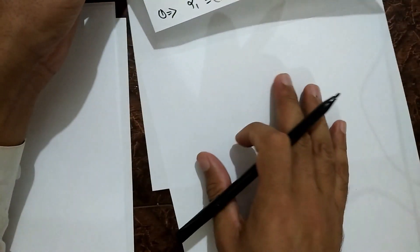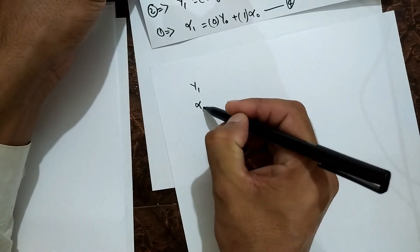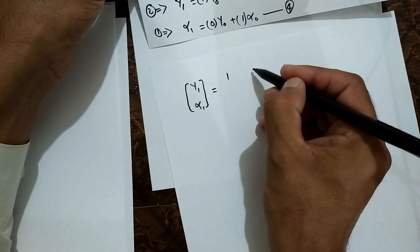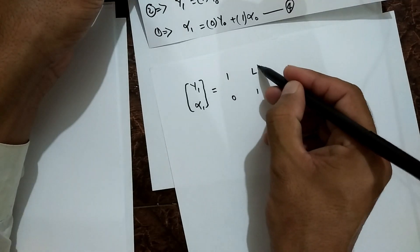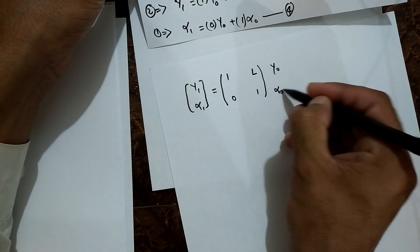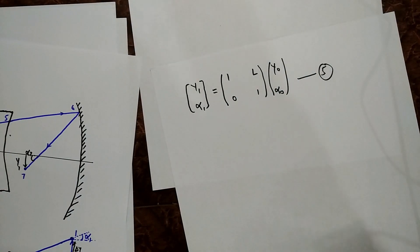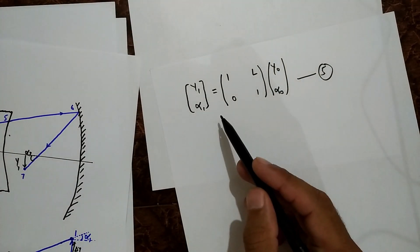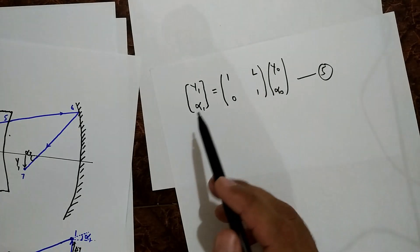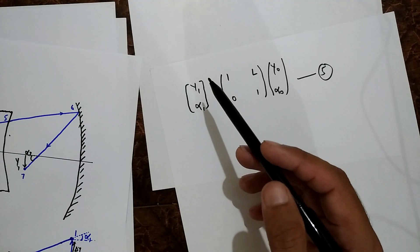We can now write these in matrix form: the output column vector [y₁, α₁] equals the 2×2 matrix with entries [1, L; 0, 1] multiplied by the input column vector [y₀, α₀]. This 2×2 ray transfer matrix represents the effect of translation on a ray. The input data y₀ and α₀ are modified by this ray transfer matrix to yield the output data y₁ and α₁.